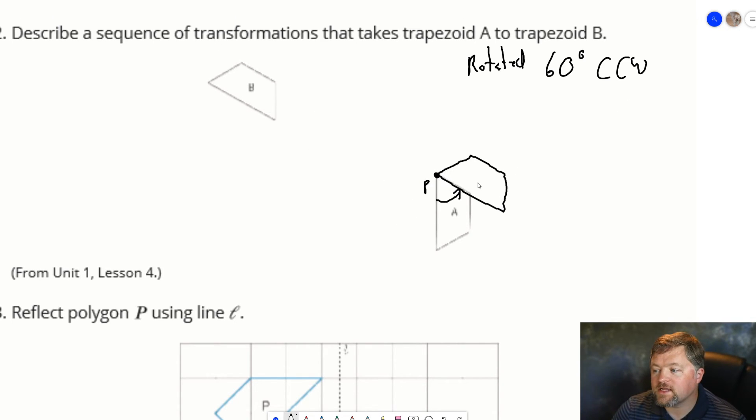Then we need to translate it to get this figure over to here. So let's label this one and call it P'. Translated from P to P'. So, a rotation, then a translation will take figure A and put it on figure B.